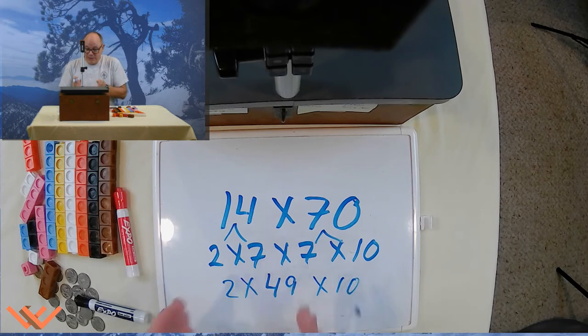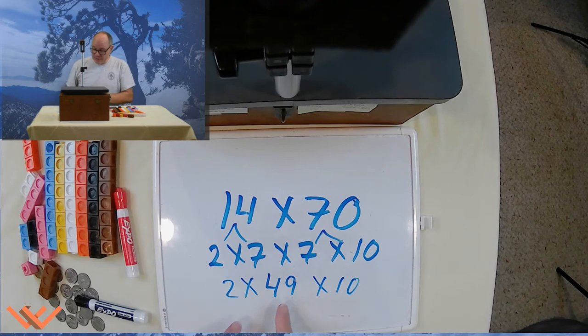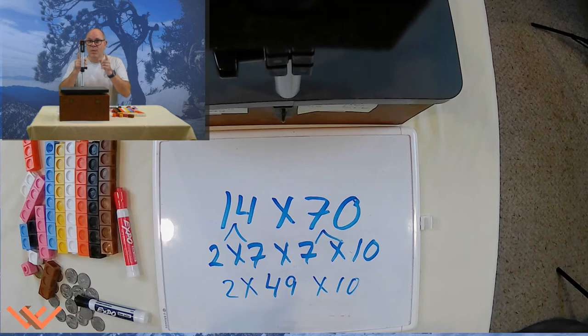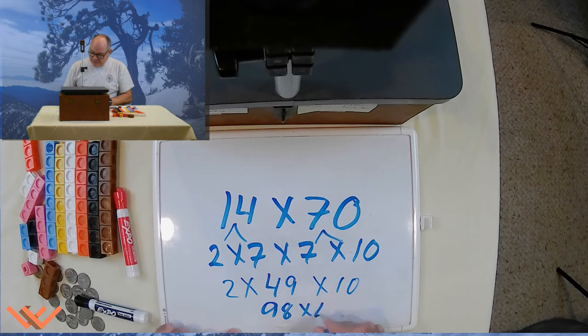That's 2 times 49 times 10. Well, let's make that 2 times 50 instead. So if we look at it that way, 2 times 50 minus 2, because we had that extra 1 there. So 2 times 50 is 100, and that makes it 98 times 10.